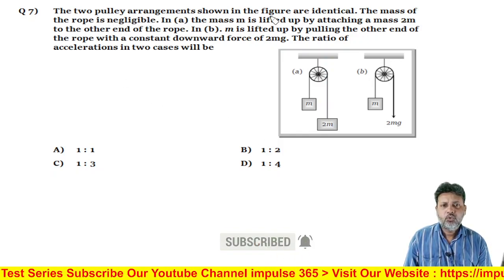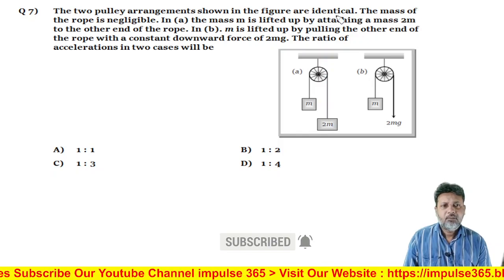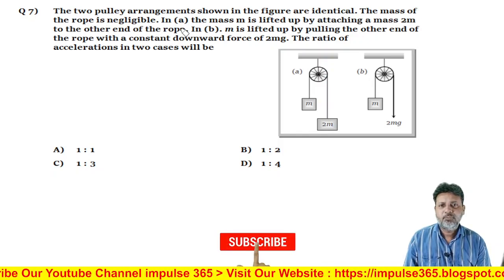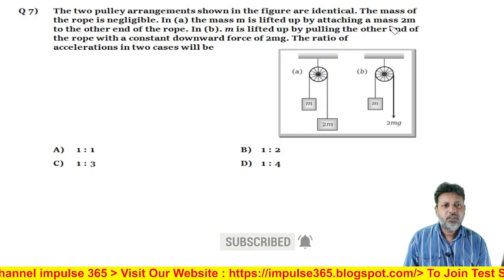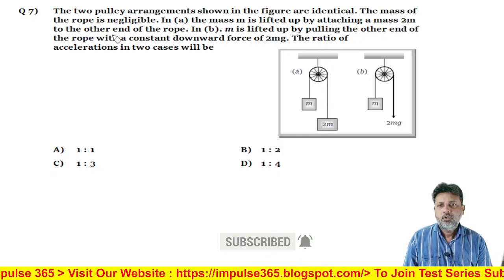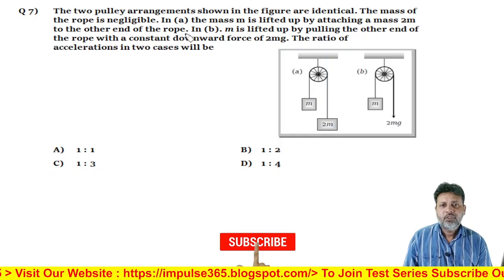Two pulley arrangements shown in the figure are identical. The mass of the rope is negligible. In A, the mass M is lifted up by attaching a mass 2M to the other end of the rope.